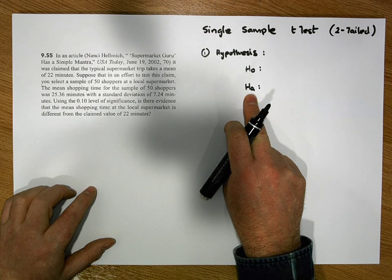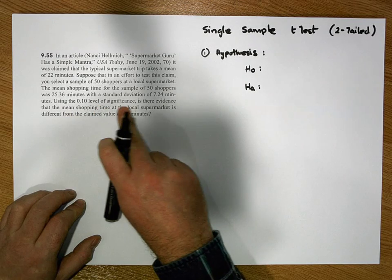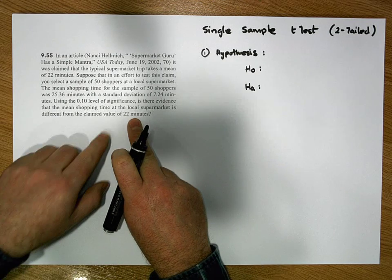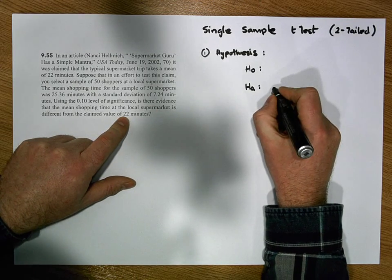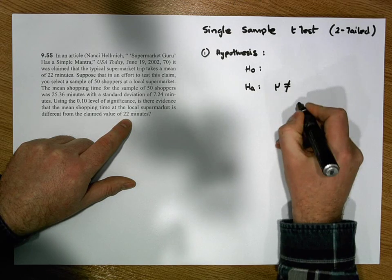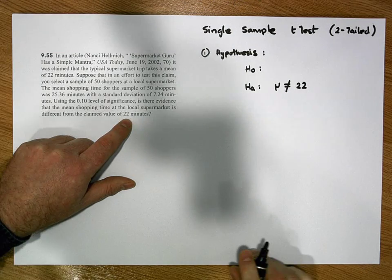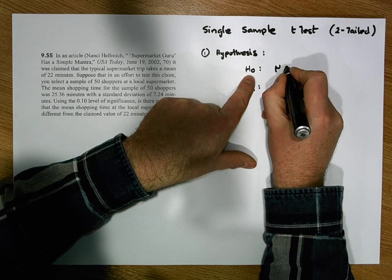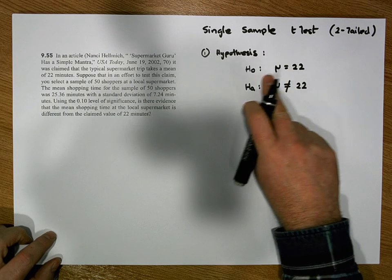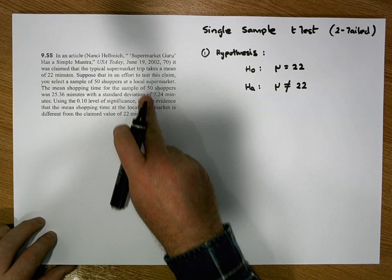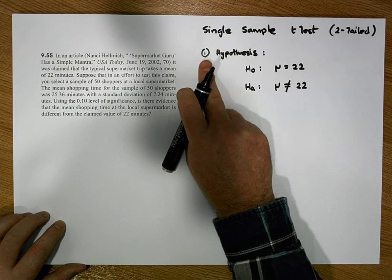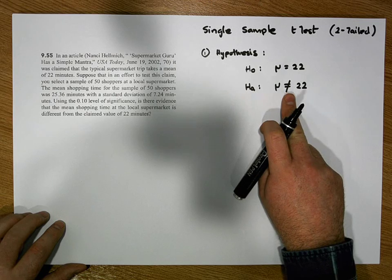The alternative is always what we're trying to prove, or what our evidence suggests. In this question we've been asked: is there evidence that the mean shopping time is different from the claimed value of 22 minutes? So the alternative is that the mean shopping time is not equal to 22 minutes, and the null hypothesis must be that the mean shopping time is equal to 22 minutes. We assume the null position to be true until we capture evidence to suggest otherwise.